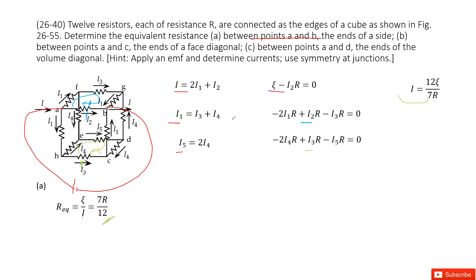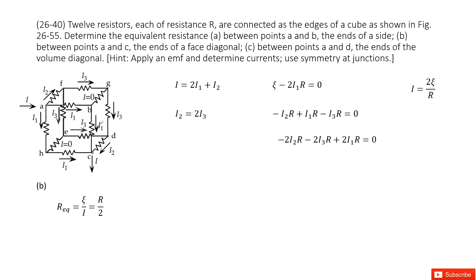For the second part, we find the equivalent resistance between points A and C. We connect A to the battery and look at C. At position A: current in is I, current out is I1 plus I2. At position F: the current in equals I2, and it splits as I3 plus I3, so I2 equals 2·I3.